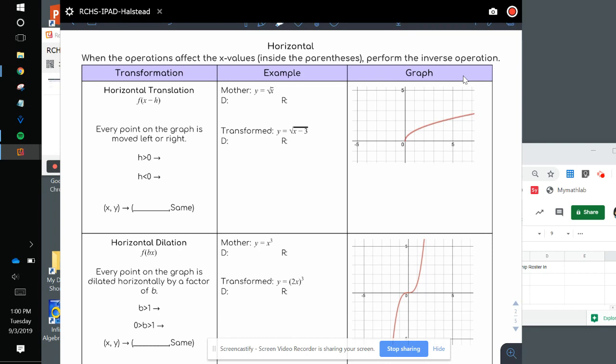Remember that anything that happens horizontally, we're actually going to perform the inverse operation. So if I have f of x minus h, the graph is moved left and right. If h is greater than 0, like if I have x minus 2, the h is actually positive 2, and the graph moves to the right.